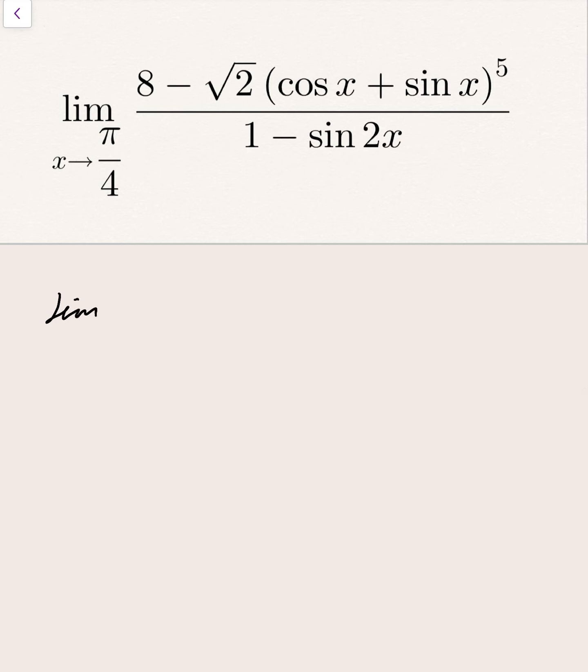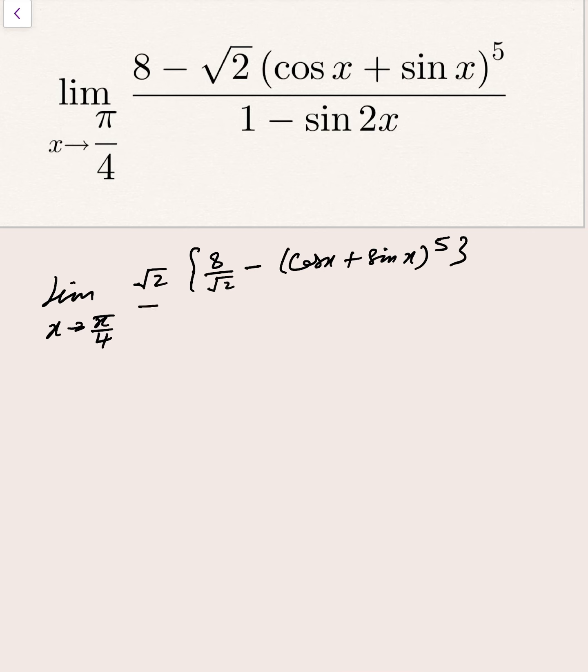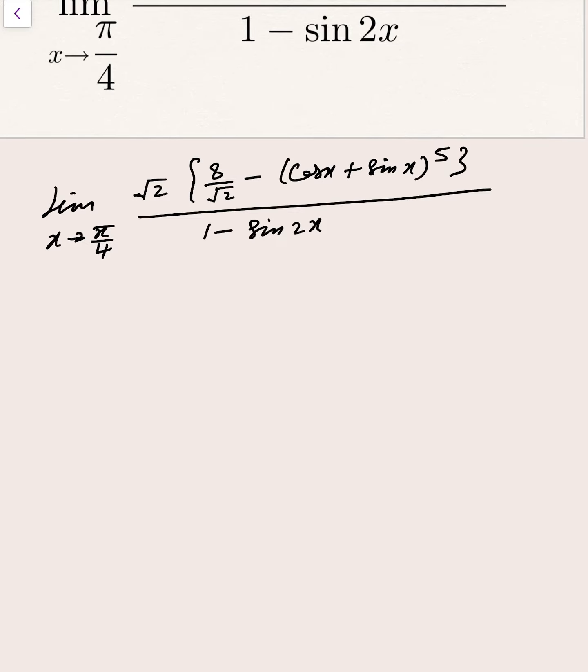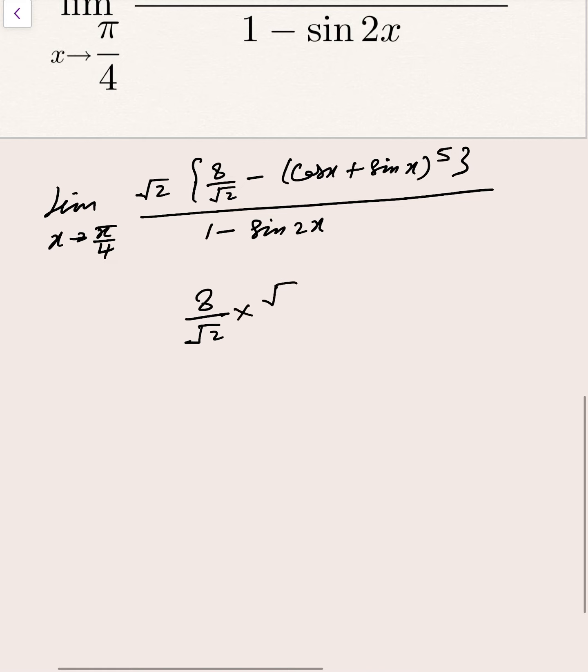First of all, if you see very carefully, this one is written as limit x tends to pi by 4. If root 2 is common, then we got 8 by root 2 minus cos x plus sin x to whole power 5, over 1 minus sin 2x. Now, I know that 8 by root 2 multiply root 2 divide by root 2, then we got 8 root 2 divided by 2. So that is written as 4 root 2.